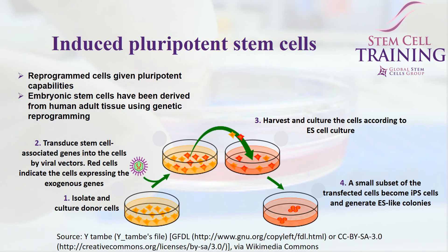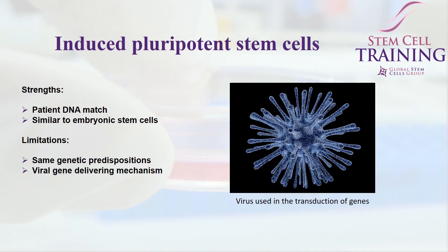The third type of stem cell is the induced pluripotent cell. These are cells that have been reprogrammed to exhibit pluripotential capabilities similar to embryonic stem cells. They behave almost identically to embryonic stem cells but have been derived from adult tissue and then genetically reprogrammed so that they behave in a pluripotential way. A strength is that they can have a patient DNA match, as they can be obtained from the same patient. Limitations may include genetic predispositions or the viral gene delivery mechanism used to induce the pluripotent state.